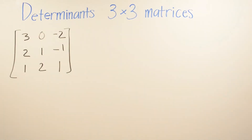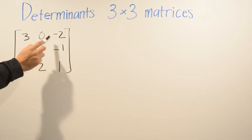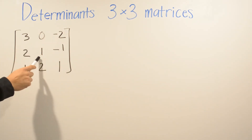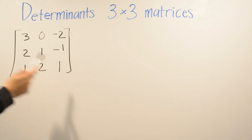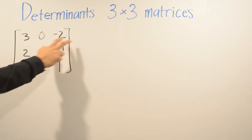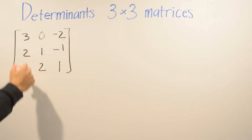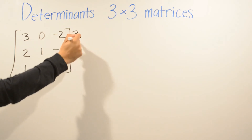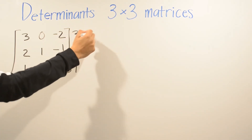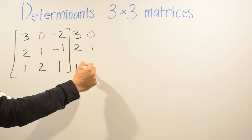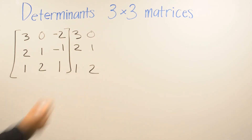In this example, we're using the matrix 3, 0, negative 2, 2, 1, negative 1, 1, 2, and 1. The method I'm going to use is to add the first two columns to the right. So we add 3, 2, 1 and then 0, 1, and 2.